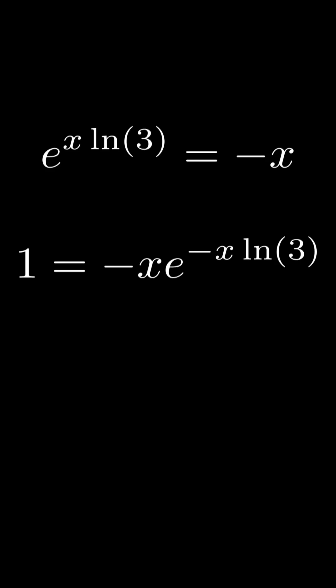It seems like we are getting somewhere. Just multiply the equation by natural log 3 and there we have something times e to the something on the right hand side. Applying the Lambert W function you get W of natural log 3 equals negative x natural log 3.